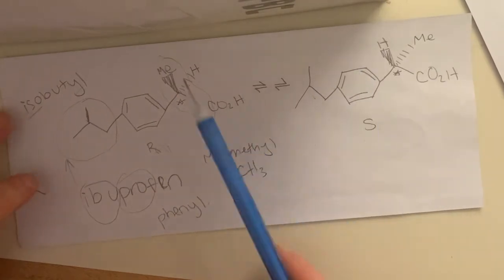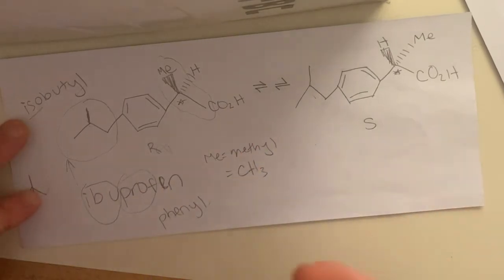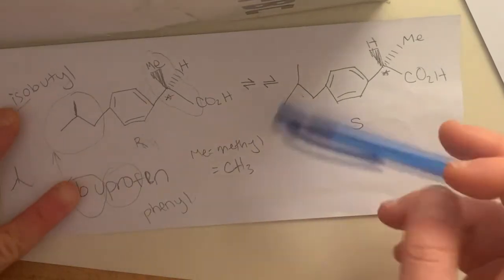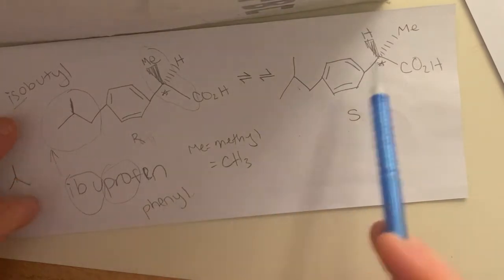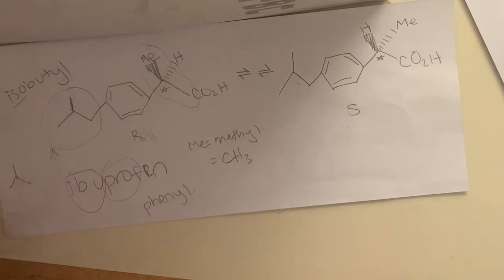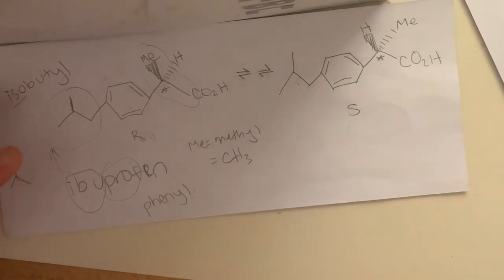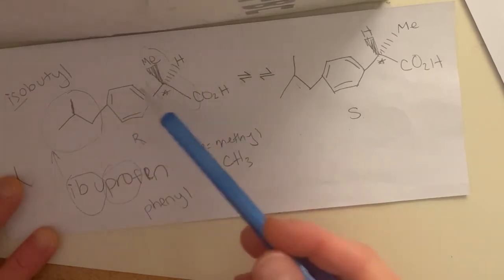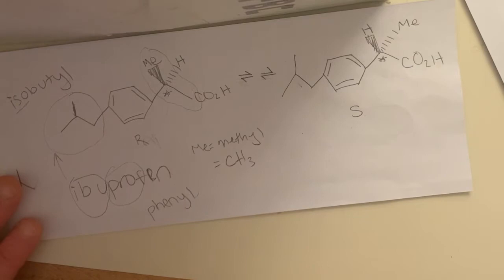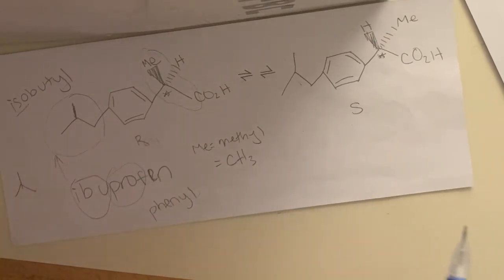So you get what we call this a racemic mixture of these enantiomers. You get this racemic mixture of these isomers. And this isn't a problem, though, because your body can actually convert between them. And so your body can take this R-form and change it into the S-form. So it's less efficient than if you just gave them all S, but your body can do it.